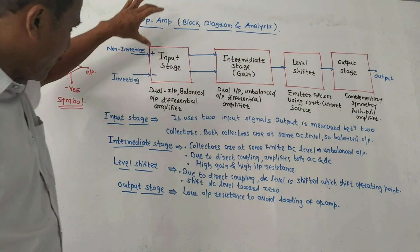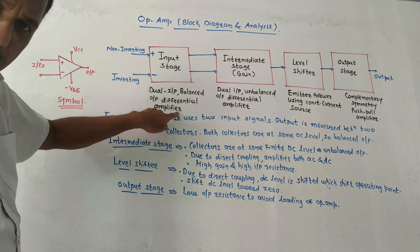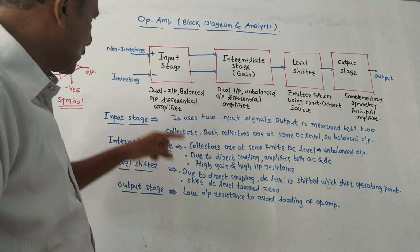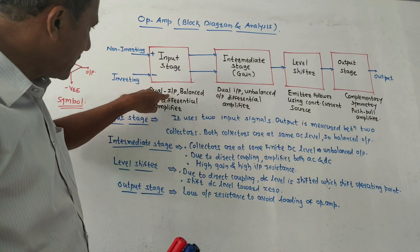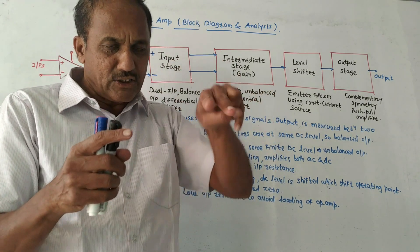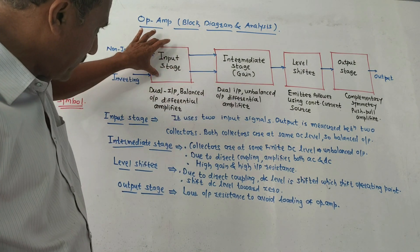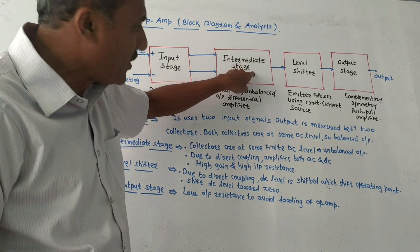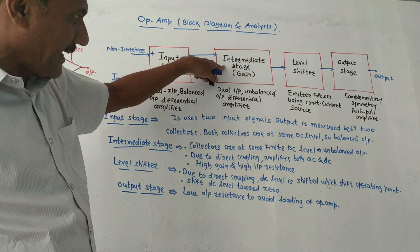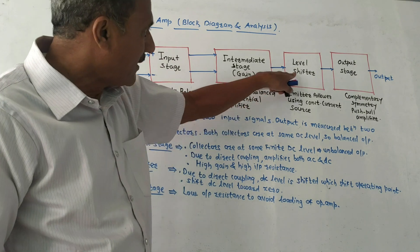There are four stages. The first is the input stage — it is a dual input balanced output differential amplifier. This circuit is built using two transistors, so it has two inputs. It is called balanced output because we take the output from the two collectors of the two transistors. The output of this input stage is applied to the intermediate stage, which provides the gain of the op-amp. This stage is a dual input unbalanced output differential amplifier.